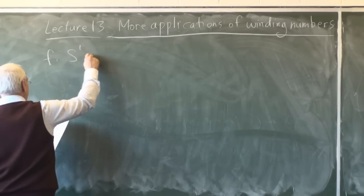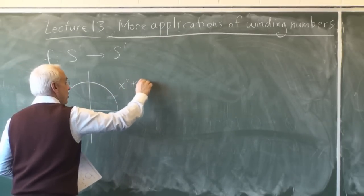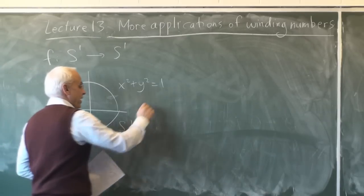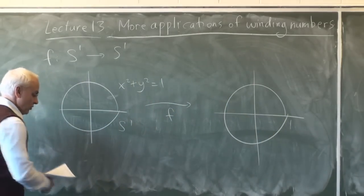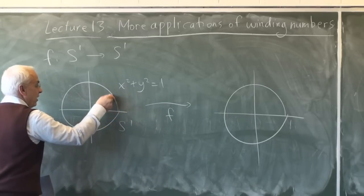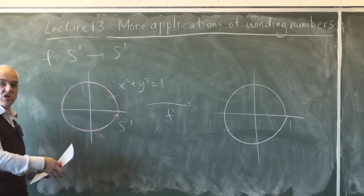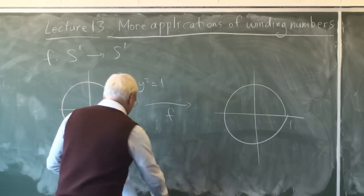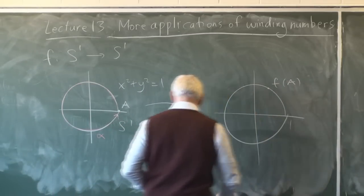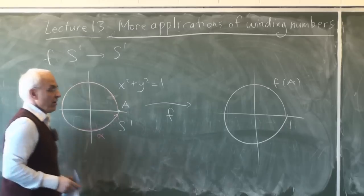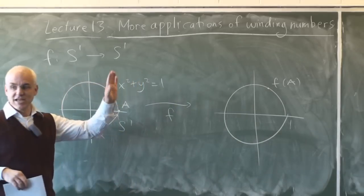We're going to start off with a function from the circle to the circle. Our circle is just the usual circle in the plane, x squared plus y squared equals 1, and we're mapping that to another copy of itself. We're looking at the boundary curve — call it alpha — going all the way around, and we look at its image under this mapping. Functions in this course are always continuous unless stated otherwise.